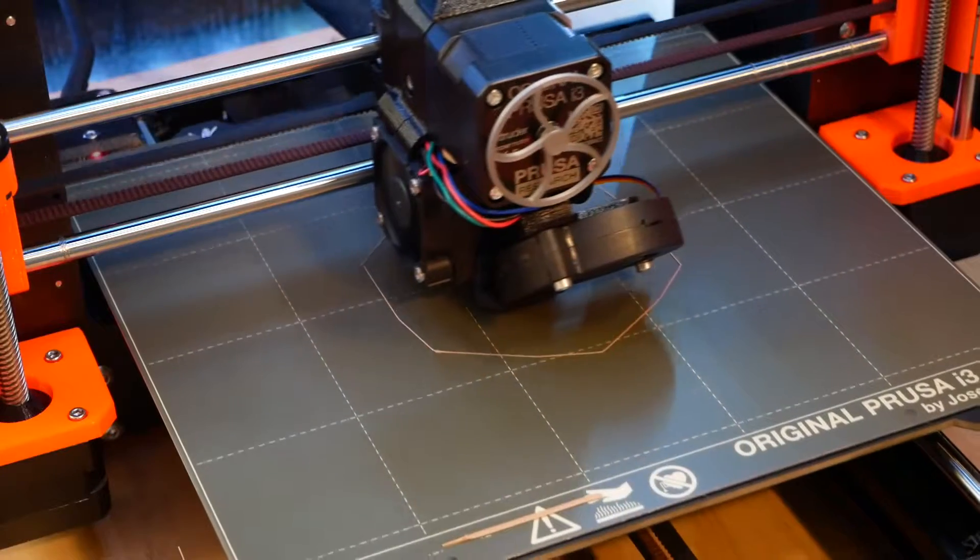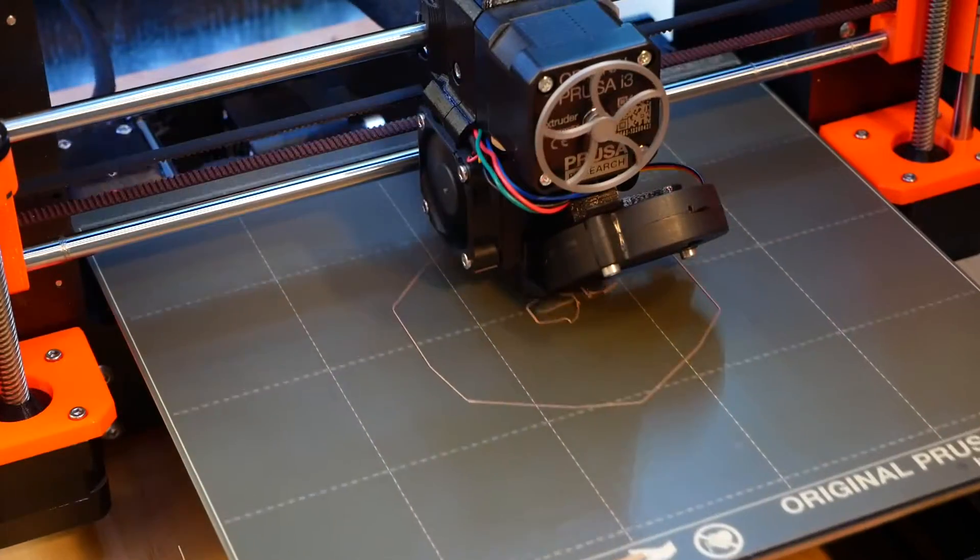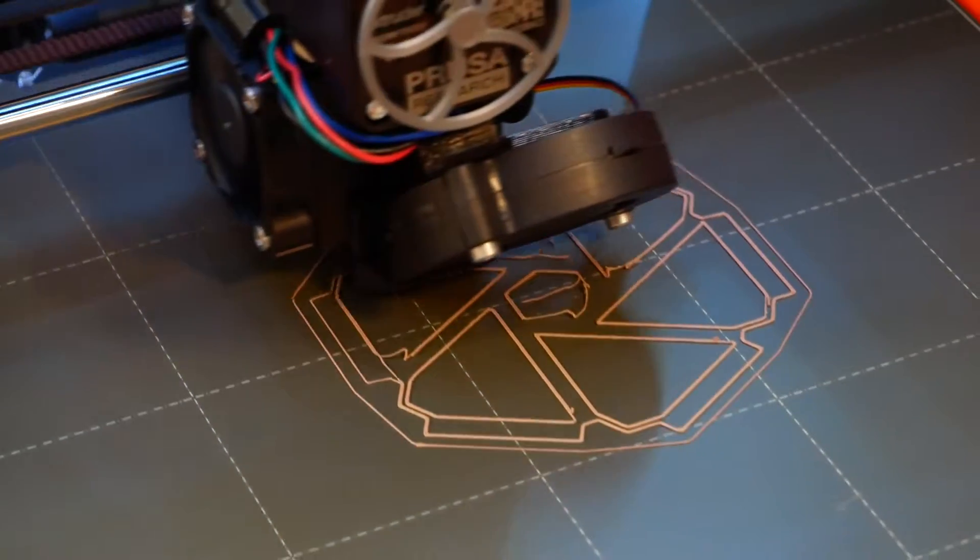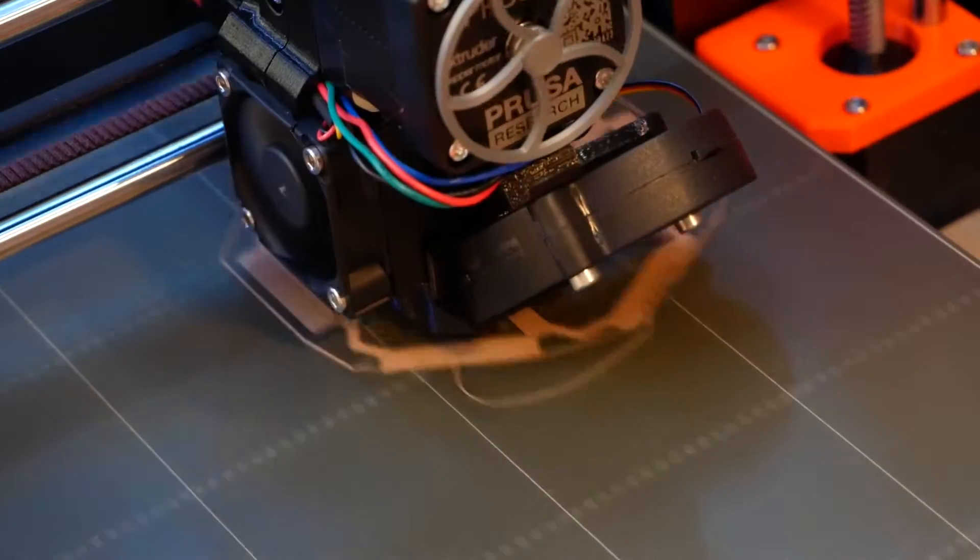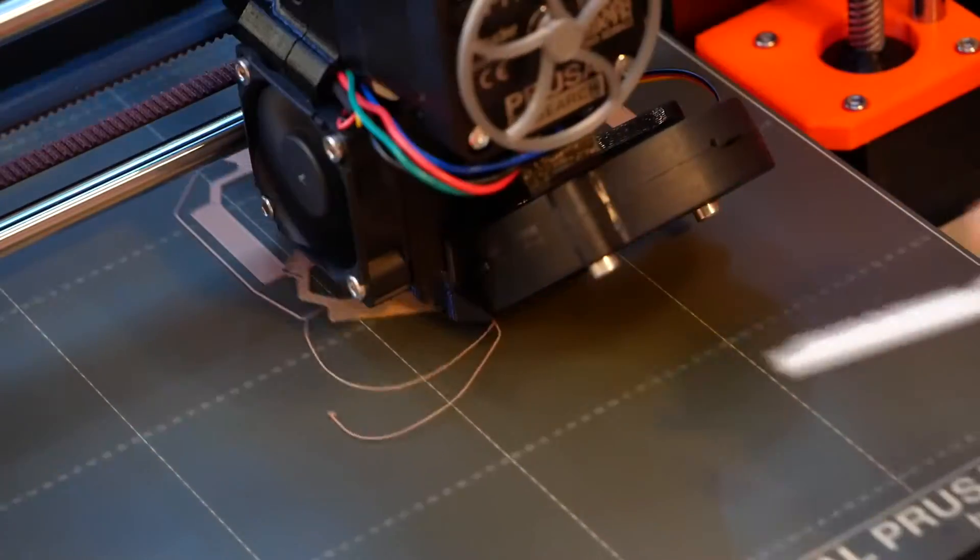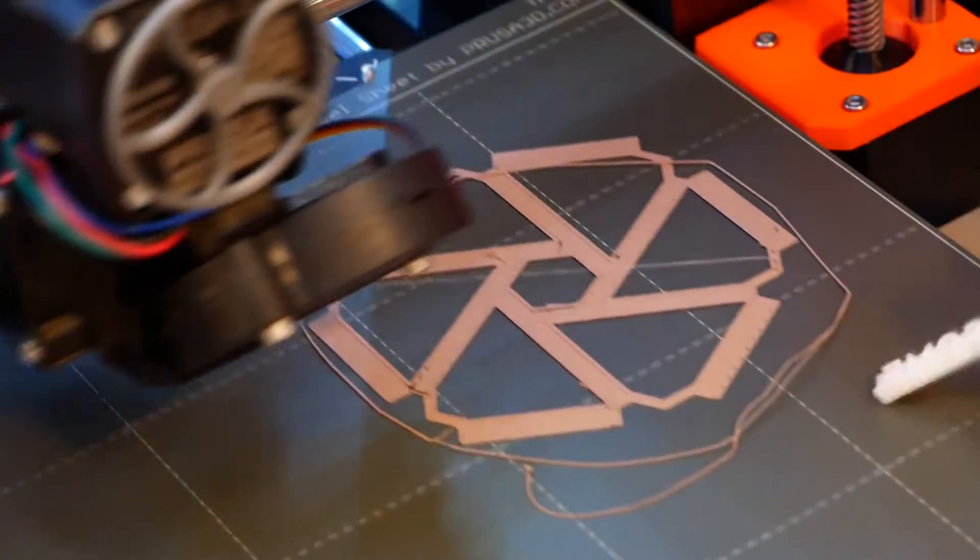But the bed adhesion issues returned right at the beginning. Again, I cleaned the bed and moved the print to a lesser used corner, but the skirt kept coming loose and interfering with the rest of the first layer. At this point, I was getting a little frustrated and didn't want to keep restarting the print, so I paused the print, removed the interfering skirt, and then resumed printing.